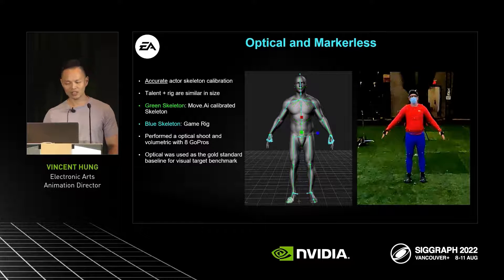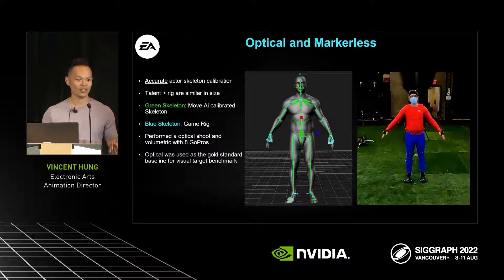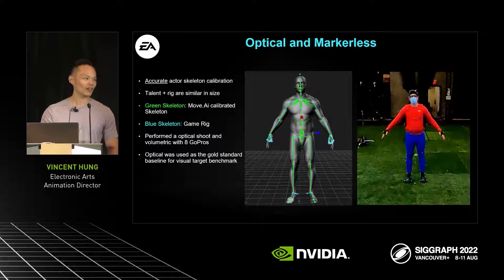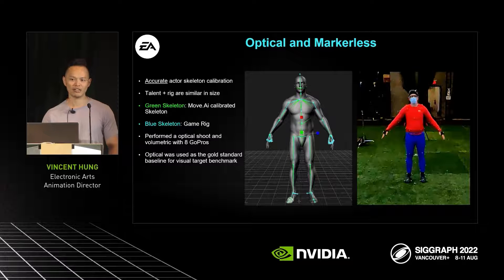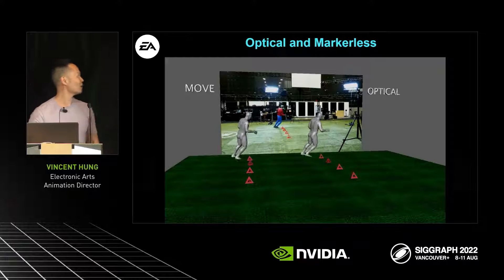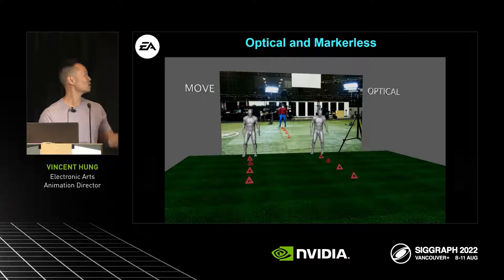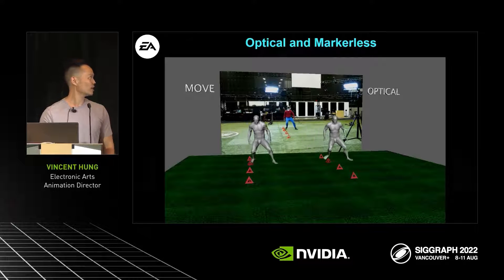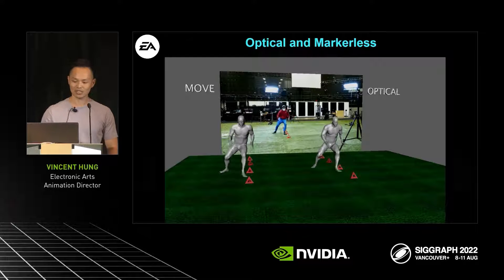Optical is the gold standard quality output in mocap animation, so that's why we use it — we have really good reference so we can give feedback to Move AI on where the areas are to improve and where we need to look out. To your right is the optical data, and to your left is the Move data. You can see this is agility.